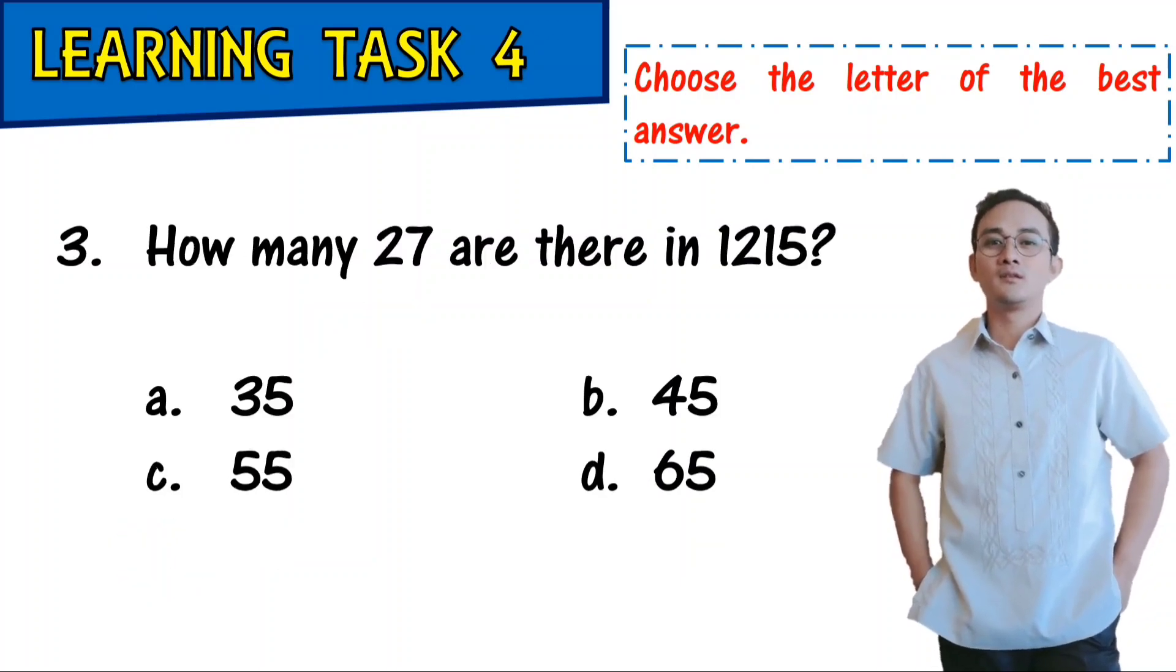How many 27 are there in 1,250? A, 35. B, 45. C, 55. D, 65.